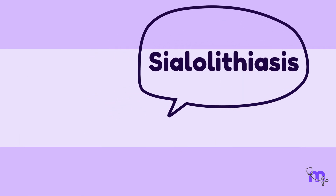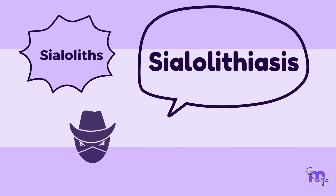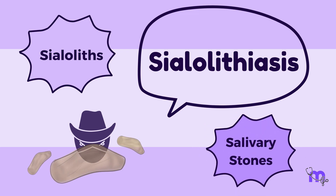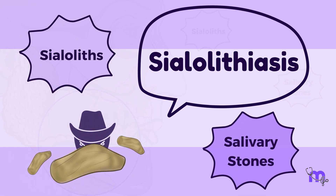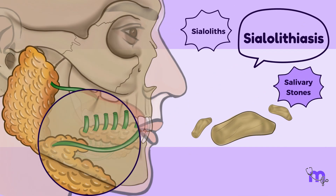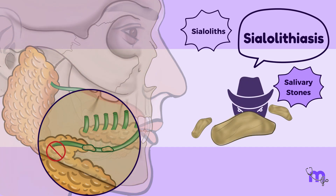First, we need to understand the culprits themselves — sialoliths or salivary stones. These are calcified structures that form inside the duct or the salivary gland itself. When present, they block the flow of saliva, causing a backup of saliva in the duct and gland.